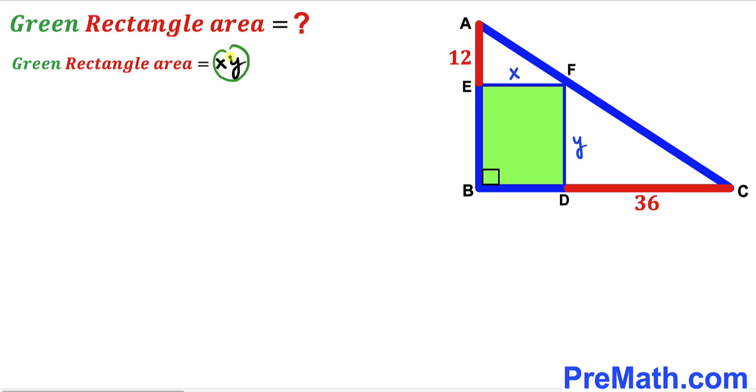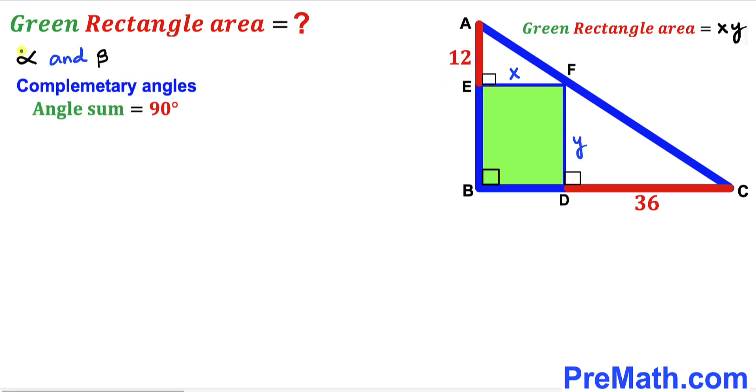Bear in mind that this angle has got to be 90 degrees, and likewise this angle is going to be 90 degrees as well since we are dealing with this green shaded rectangle. Now let's assume that alpha and beta are our two complementary angles. In other words, the sum of these two angles alpha plus beta must be equal to 90 degrees.